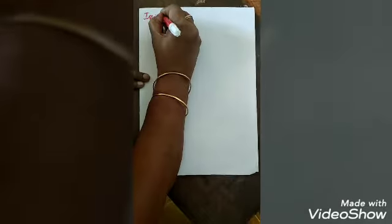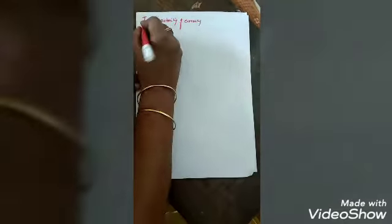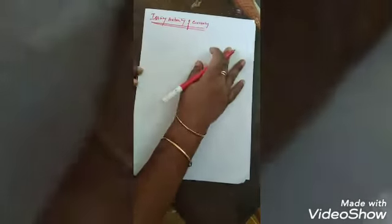Good morning, class 10 children. Yesterday we saw the introductory part of the third chapter — banking, money and credit. Now we are going to see the second revision part from the same chapter, which is the issuing authority of currency. We already studied this, so this is a revision time for us.